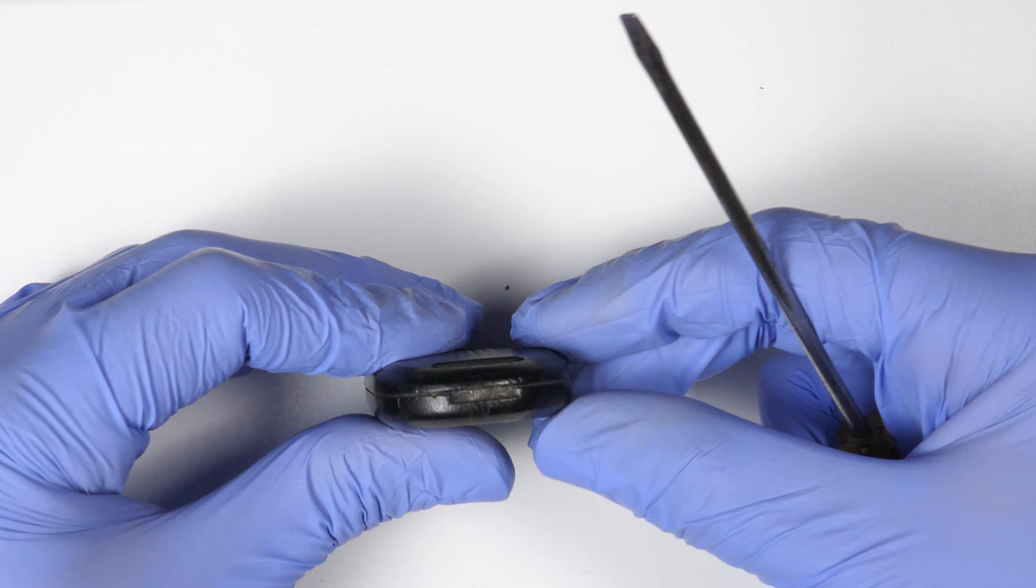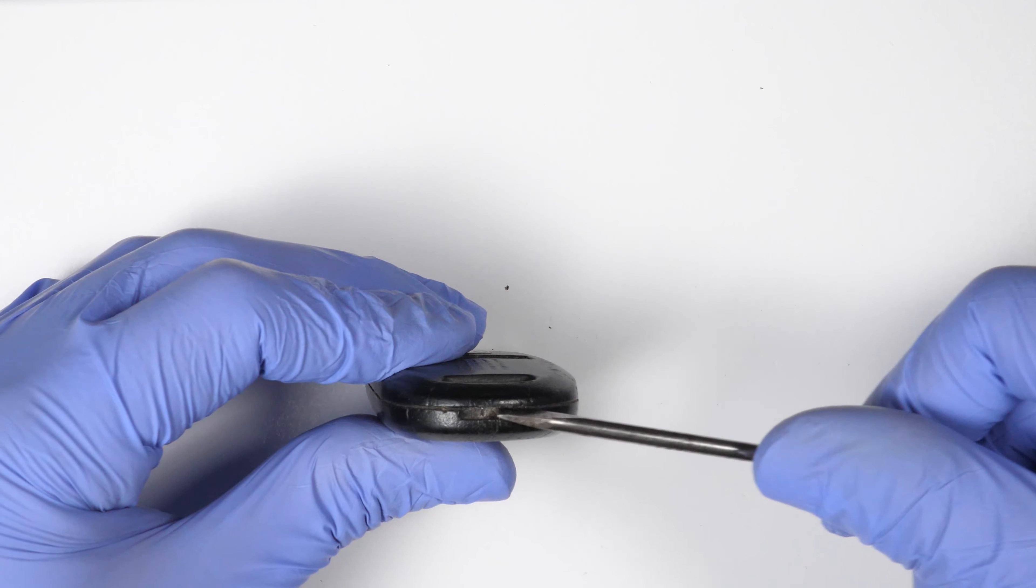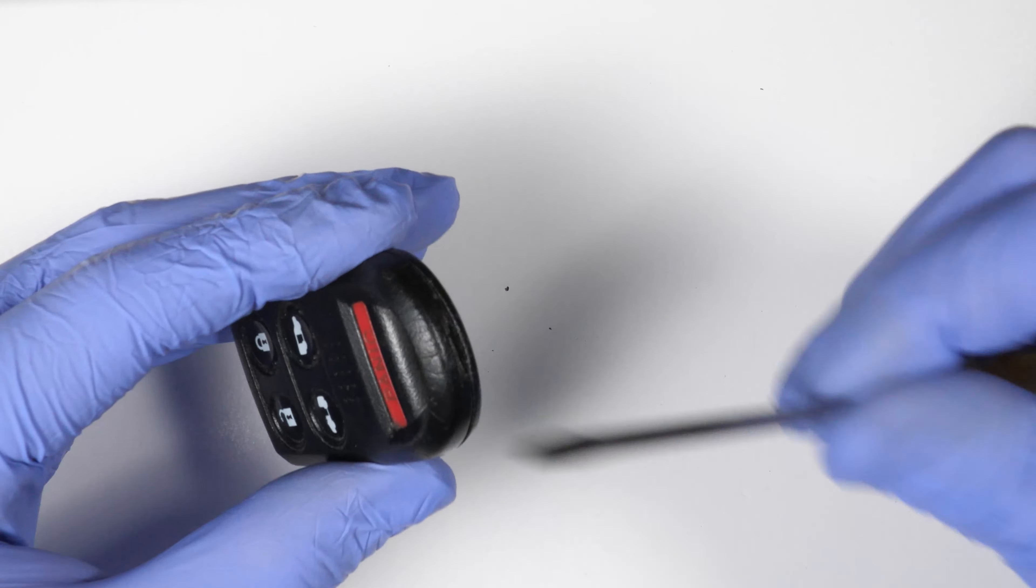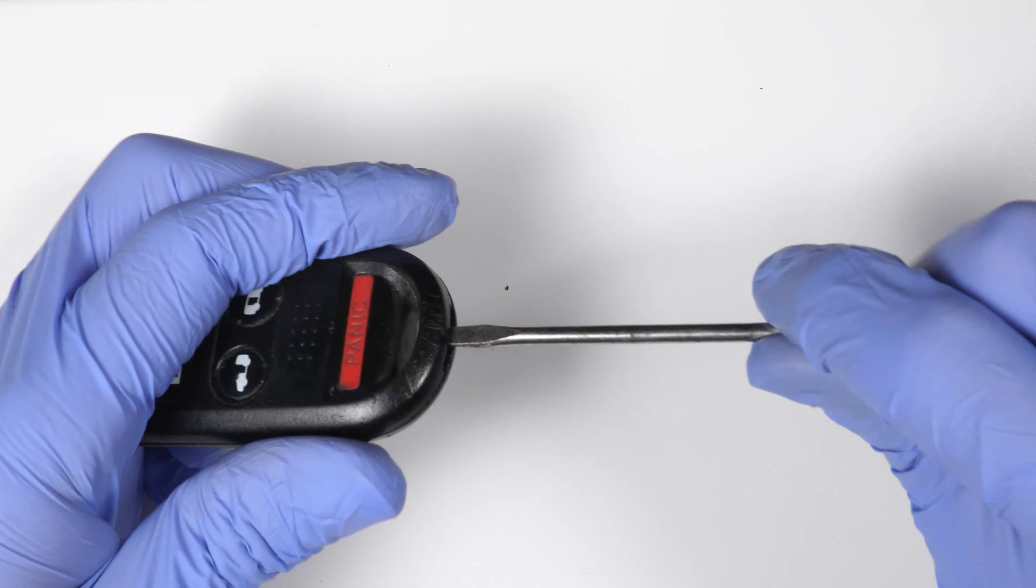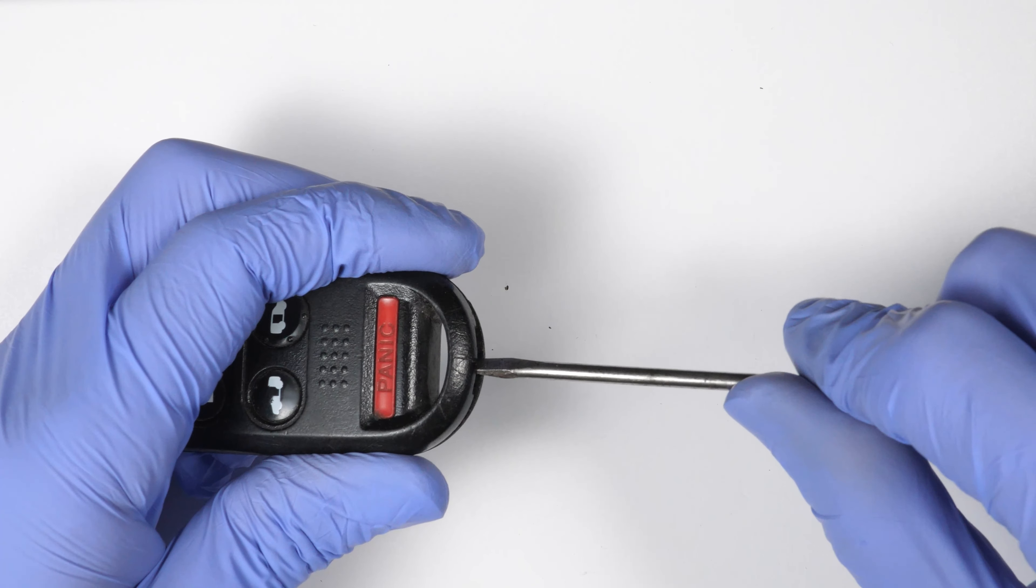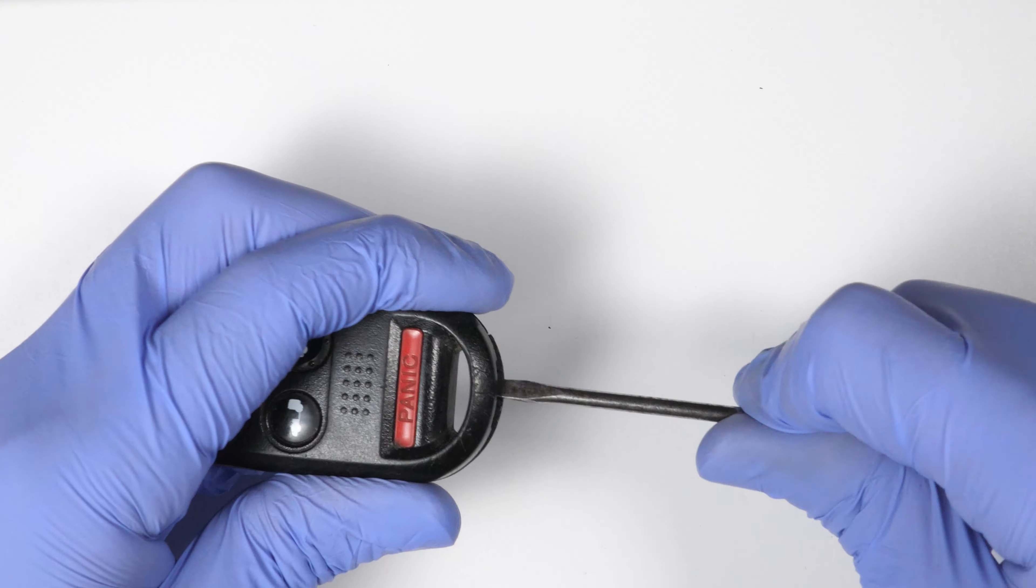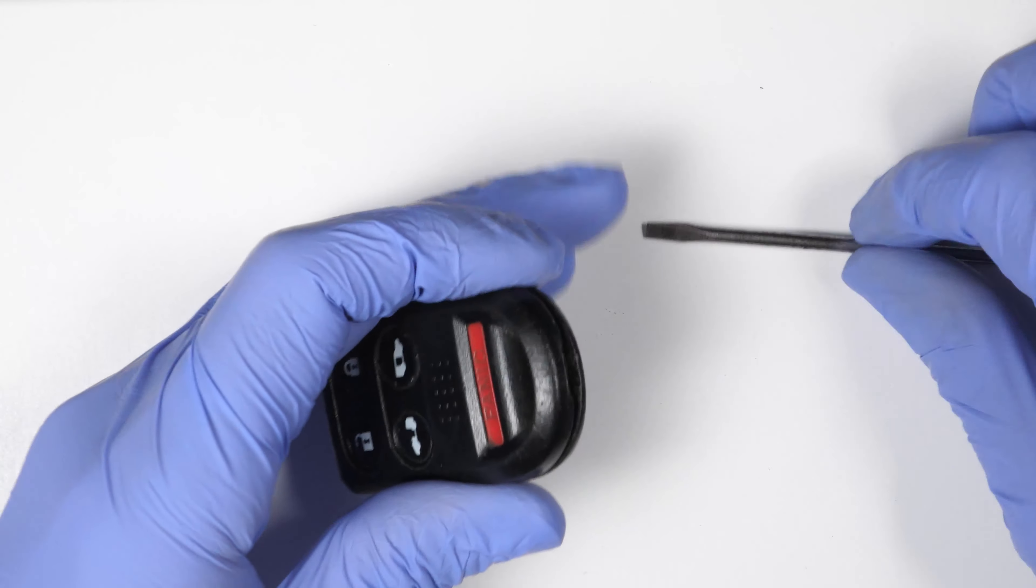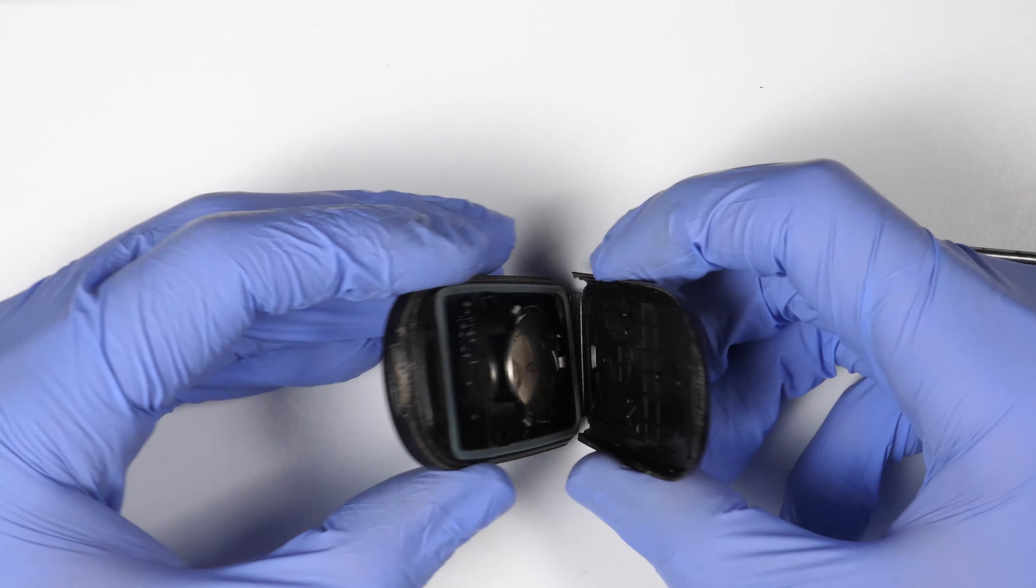You'll take your key fob. If you look right here, there's a small slot where you can insert your screwdriver. Do it and turn it. This way the casing will separate, just like that.